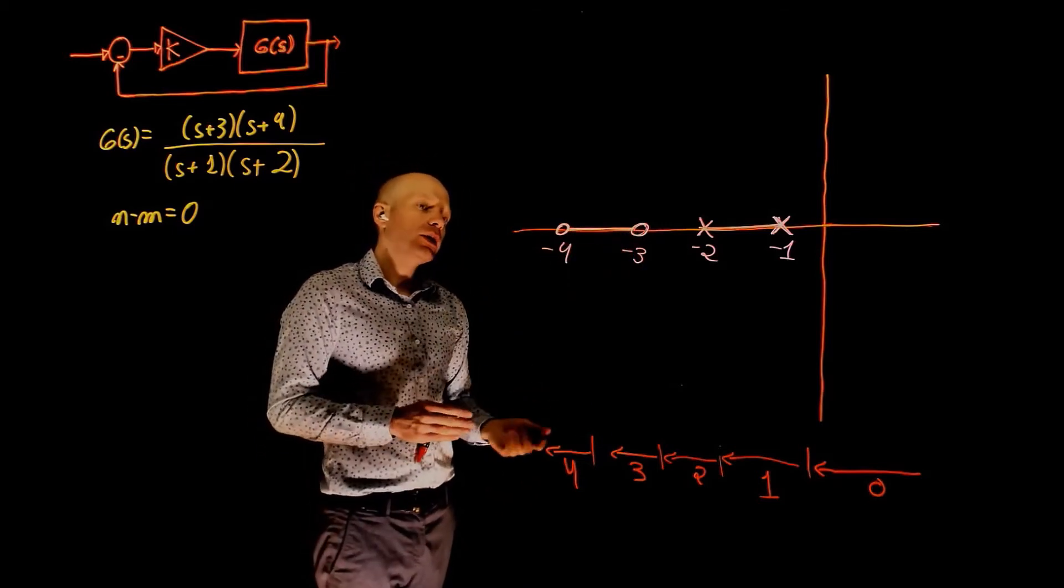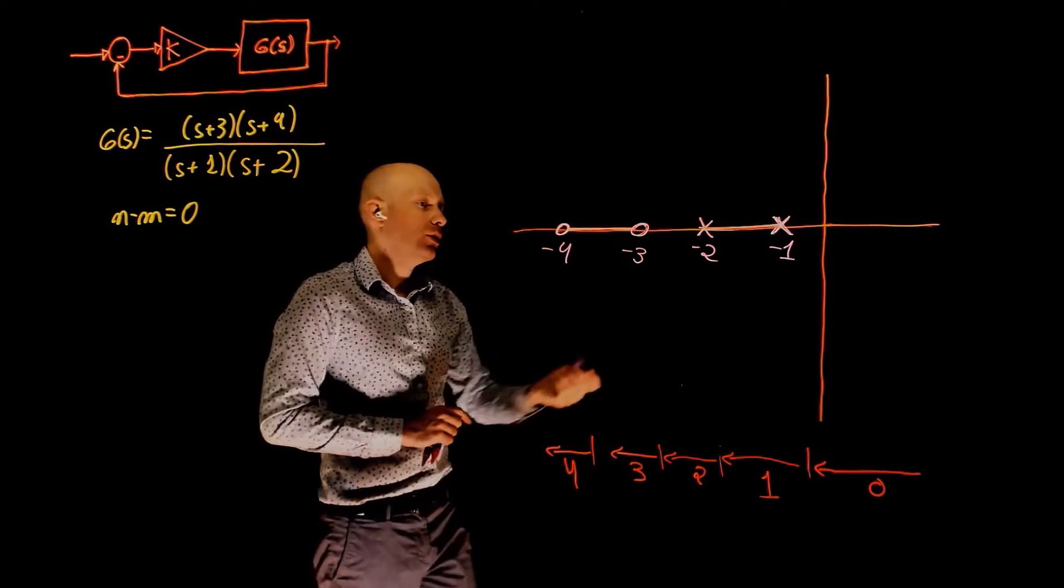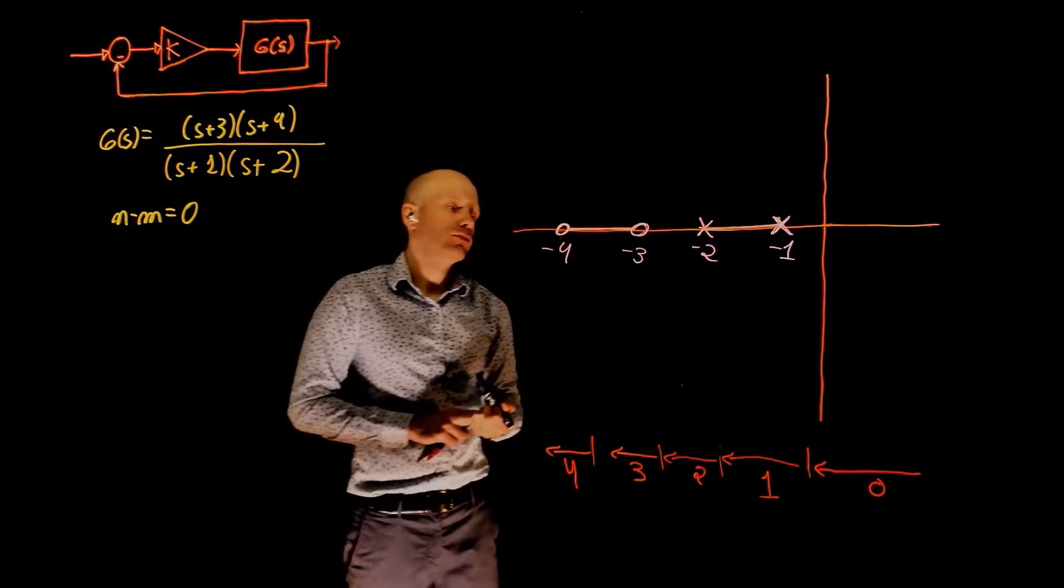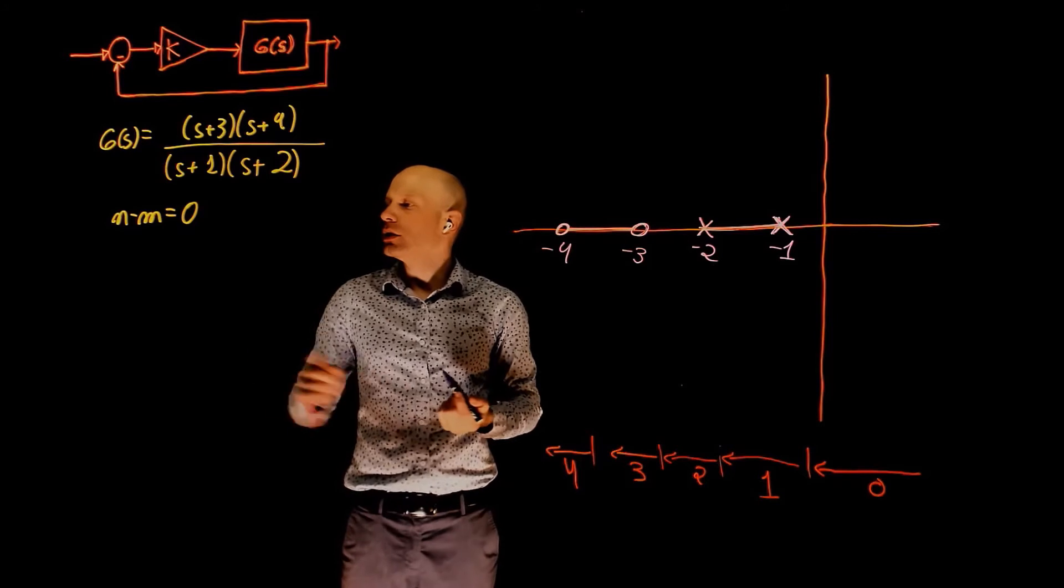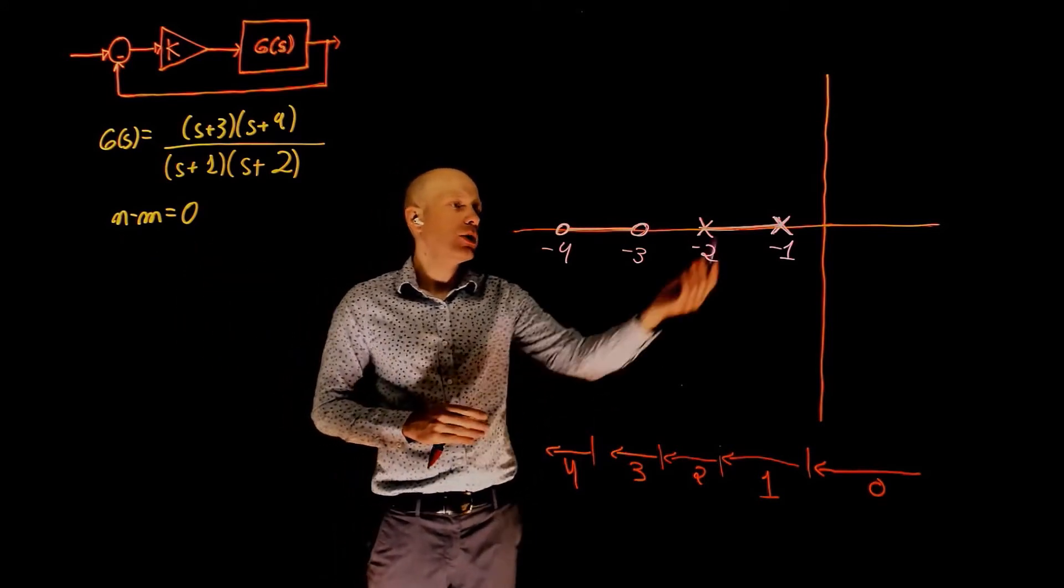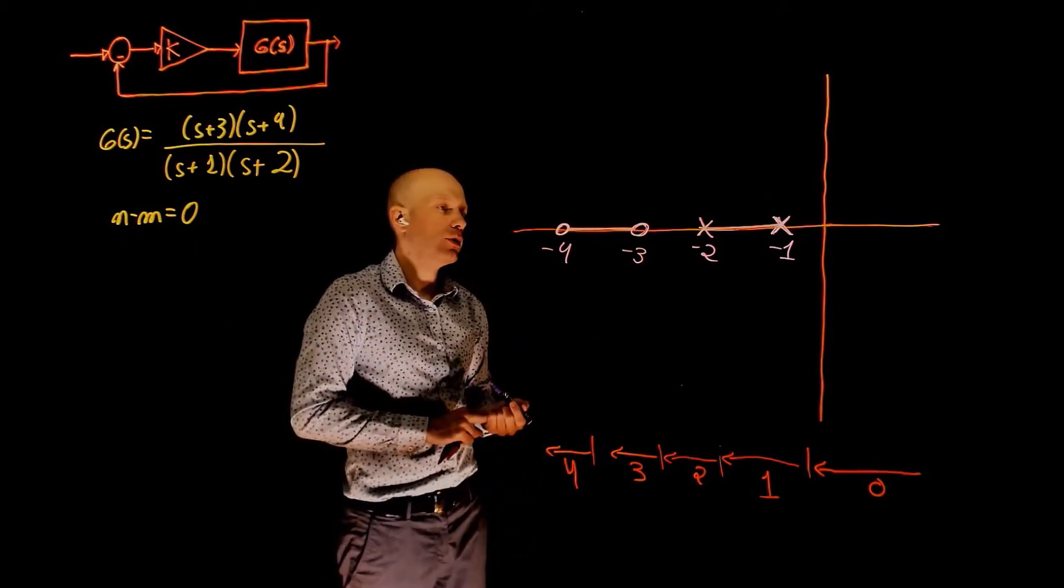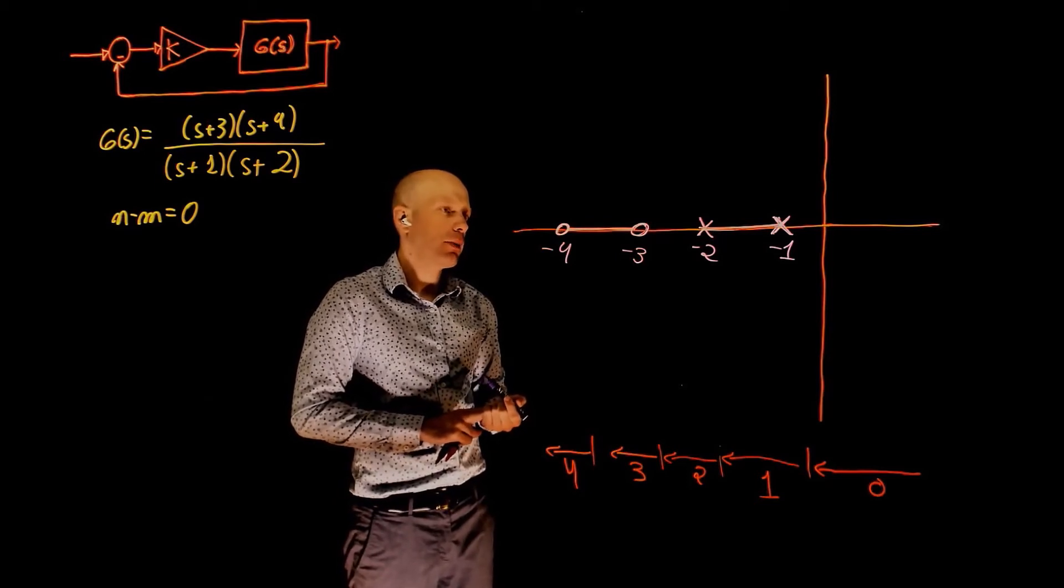This is not completed because a zero cannot go to a zero, a pole cannot go to a pole. Interestingly, n minus m is zero. There are no asymptotes that will bring poles or zeros to infinity or from infinity. So what happens?